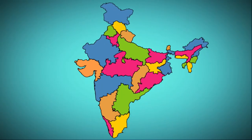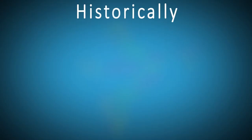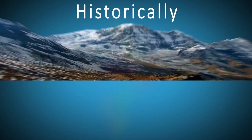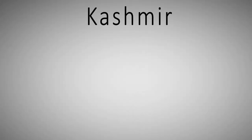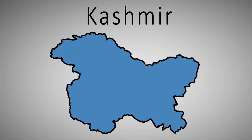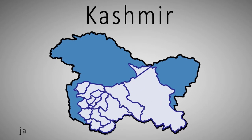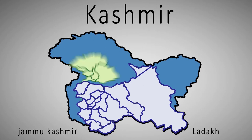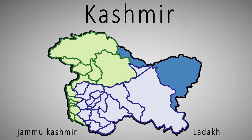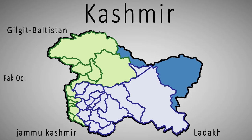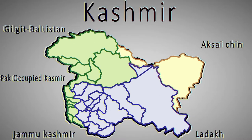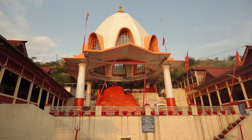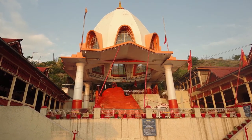Kashmir is a north-western region of the Indian subcontinent. Historically, the term Kashmir was used to refer to the valley lying between the Great Himalayas and the Pir Panjal Range. Today, Kashmir refers to a large area that includes Jammu and Kashmir administered by India, comprising Jammu Kashmir and Ladakh region, the Pakistani-administered regions of Gilgit-Baltistan and Pakistan-occupied Kashmir, and the Chinese-administered region called Aksai Chin.